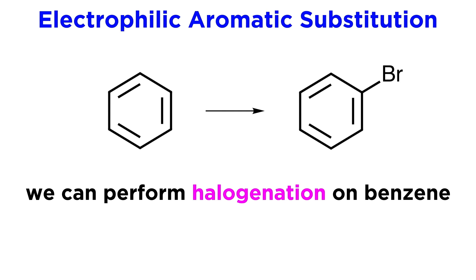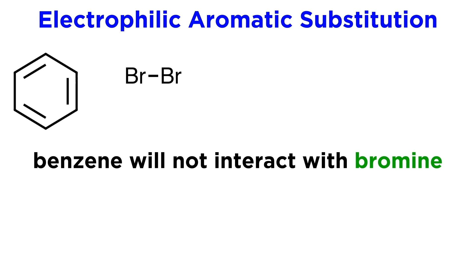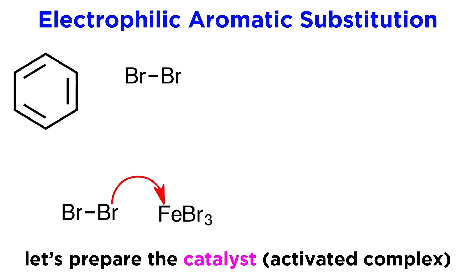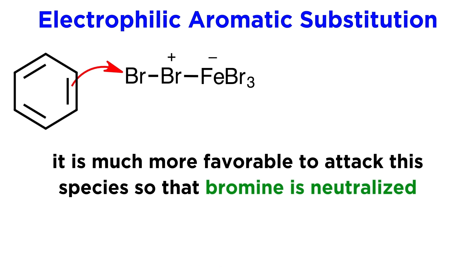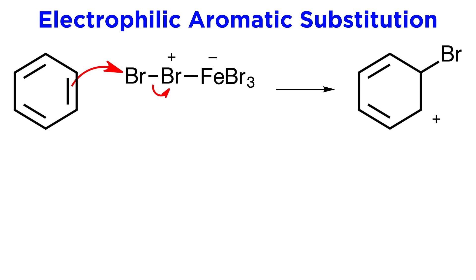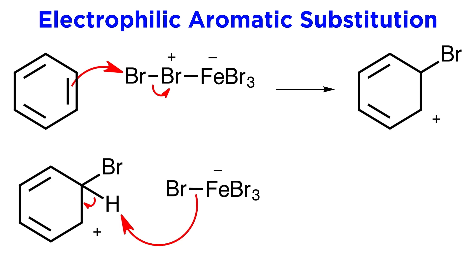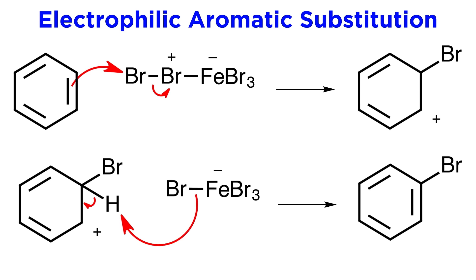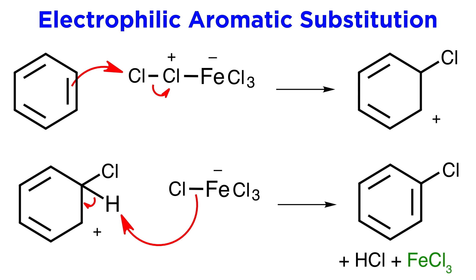First, there is halogenation. We can brominate benzene by using bromine in the presence of iron tribromide as a Lewis acid catalyst. Benzene will not interact with bromine on its own, but if bromine attacks the catalyst, since the iron atom is electron deficient, it will form this activated complex, which is much more electrophilic, since attacking this bromine will allow these electrons to go and neutralize this positively charged bromine. This catalyst therefore lowers the activation energy required to get benzene to attack this electrophile. One of these bromides will extract this proton, giving bromobenzene as a product, and the catalyst is regenerated.